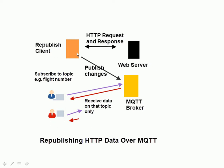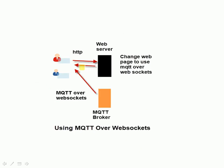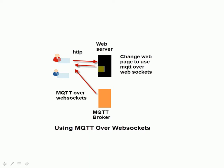Ultimately, you'd move to a situation where you connect to the web server using HTTP and change the web page so that it actually uses MQTT over WebSockets, with the flight information provided from the MQTT broker. You'd still probably need a republish script in the background to take the data from the web server and put it into the MQTT broker. This scenario will be covered in another video once the web page is written.